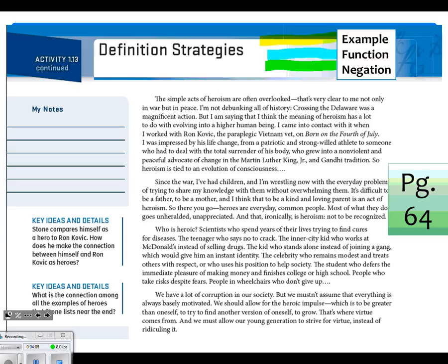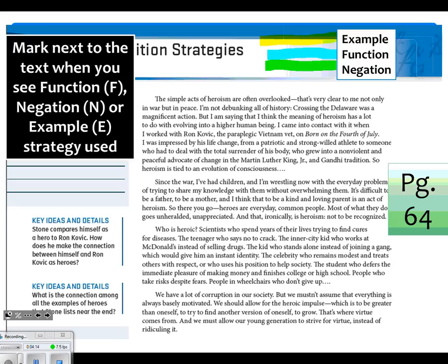I'm going to show you a couple of things that I saw. First off, really obvious, there's an example, Ron Kovic. The author uses Ron Kovic to describe what is a hero. But there's also a couple of function strategies in there too. So the fourth line of the paragraph, the author says that heroism is evolving into a higher human being. That's a function, that's describing a hero. And also at the very end of the paragraph, it says that heroism is tied to an evolution of consciousness. That's also a function.